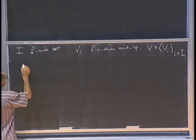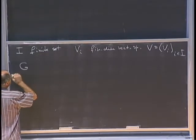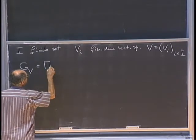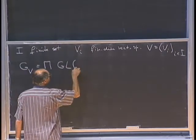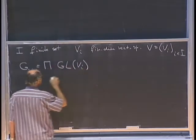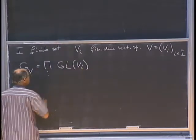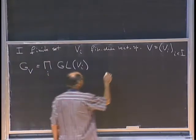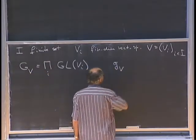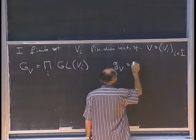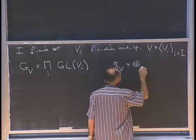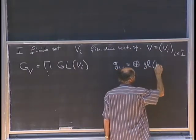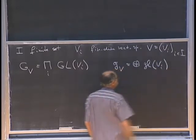As before, our group will be G sub V, which is the direct product of GL's of all these vector spaces. The Lie algebra is the direct sum of general linear matrices of the vector spaces V_i.